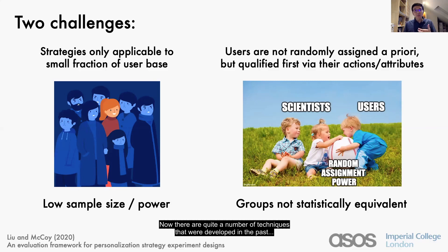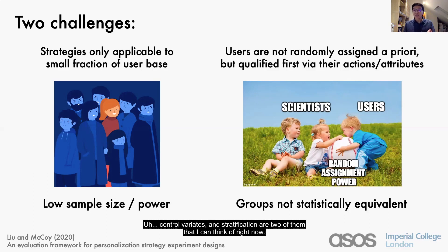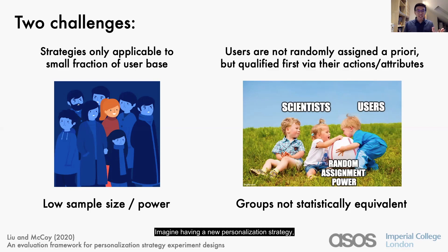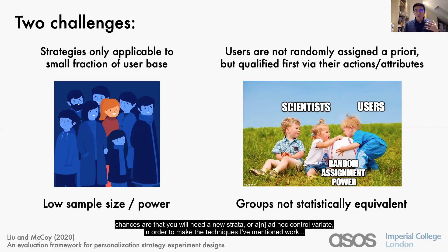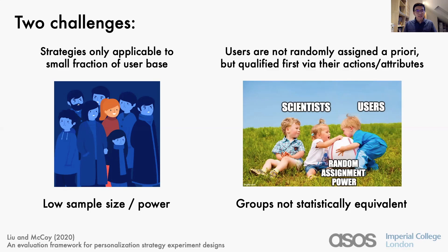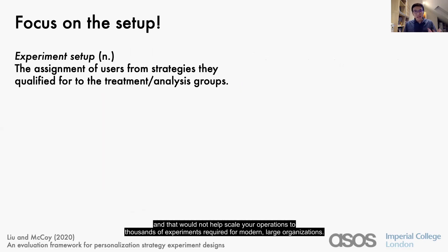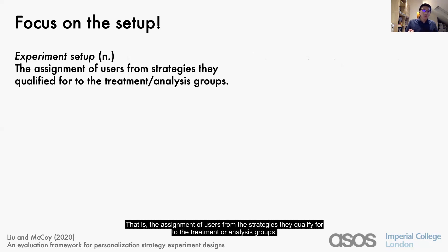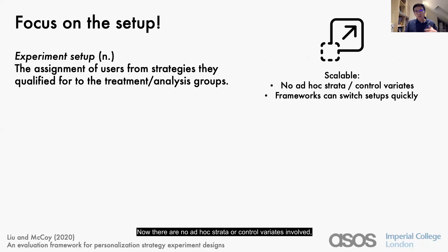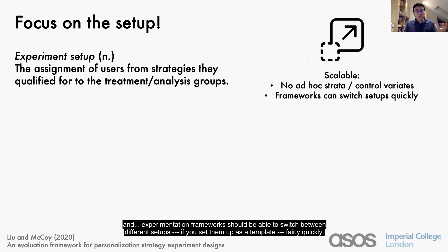There are quite a number of techniques developed over the years that try to address these two issues. Control variates and stratification are two of them. However, we argue these techniques are quite ad hoc and hence would not scale with personalization strategy experiments. Imagine having a new personalization strategy — chances are you will need a new strata or ad hoc control variate to make these techniques work. That would not help scale your operations to thousands of experiments required for modern large organizations. Hence, what we argue is that one should focus on the setup — that is, the assignment of users from the strategies they qualify for to the treatment and analysis groups. There are no ad hoc strata or control variates involved, and an experimentation framework should be able to switch between different setups quickly if set up as a template.